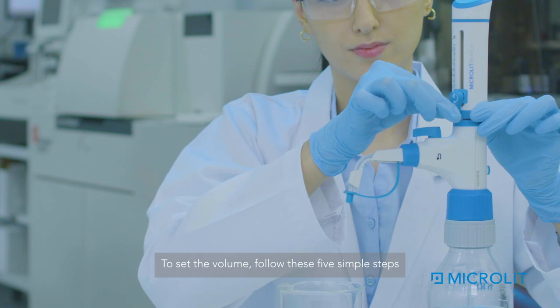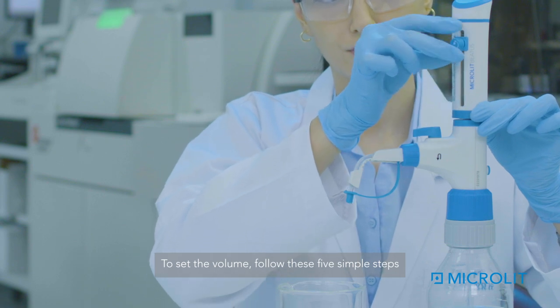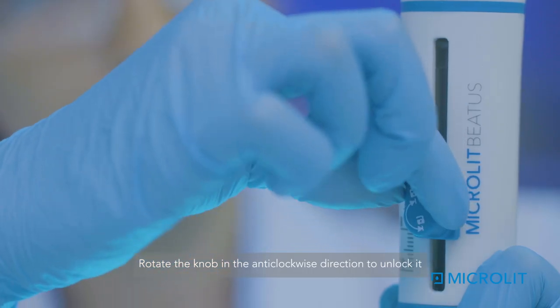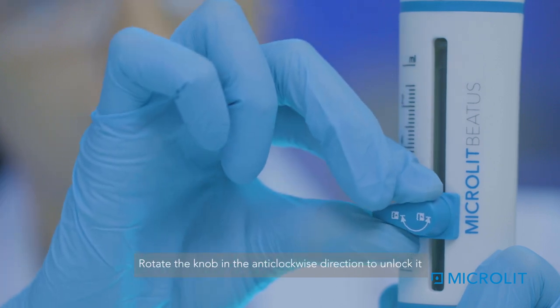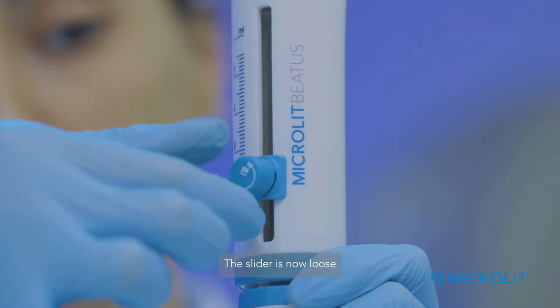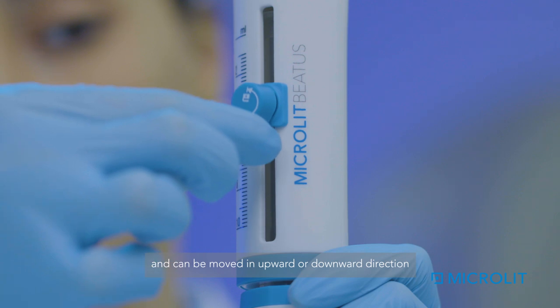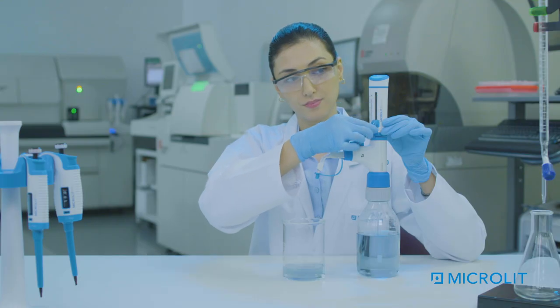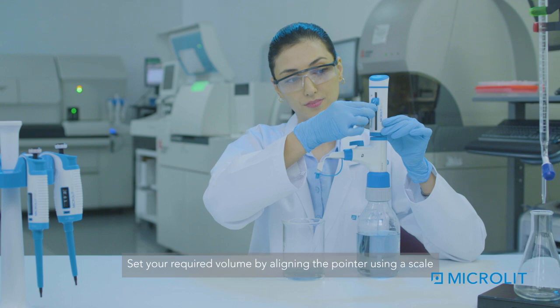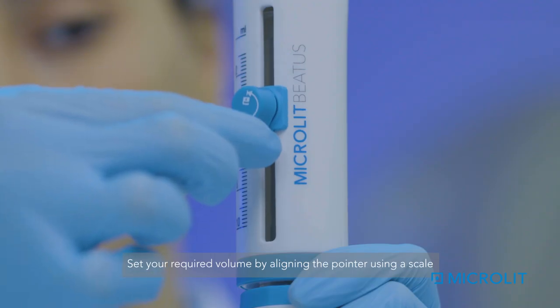To set the volume, follow these five simple steps. Rotate the knob in an anti-clockwise direction to unlock it. The slider is now loose and can be moved in an upward or downward direction. Set your required volume by aligning the pointer using a scale.